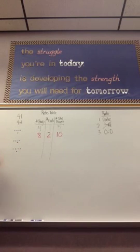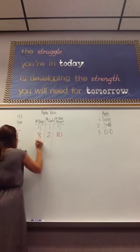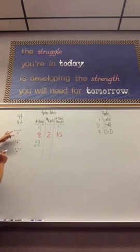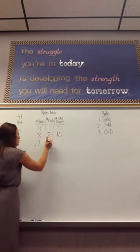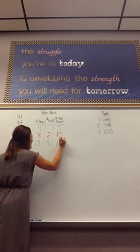So, if the ratio is for every four boys, there is one girl. So, now we have four, eight, twelve boys on the soccer team and one, two, three girls for a total of 15 players.